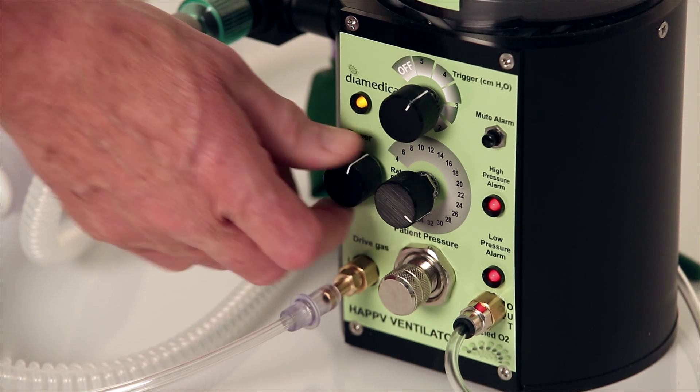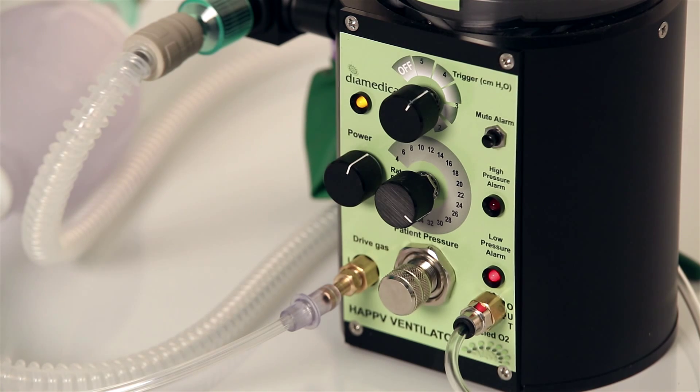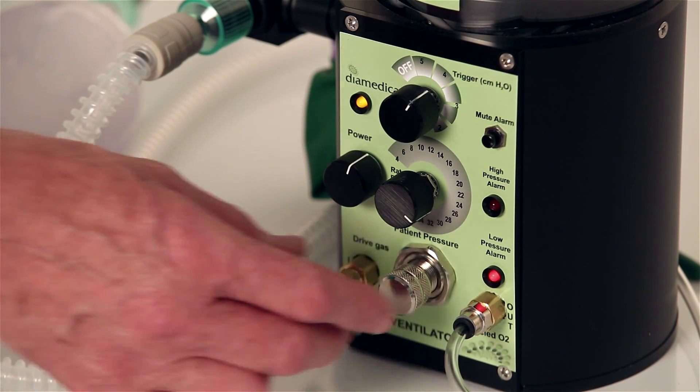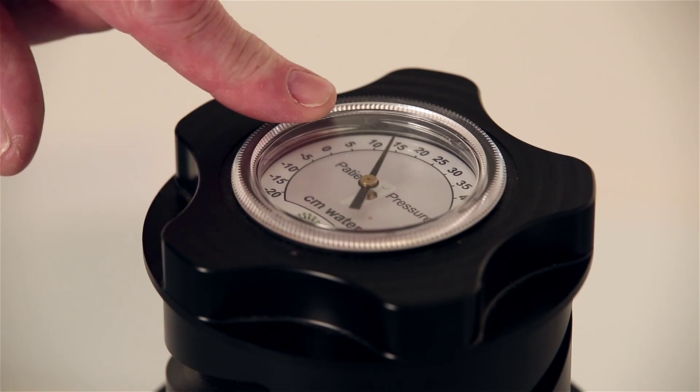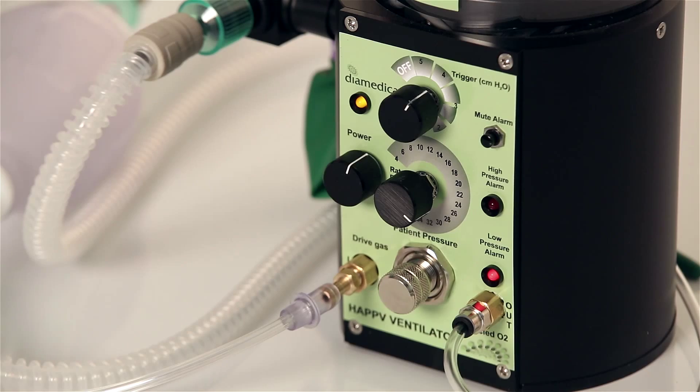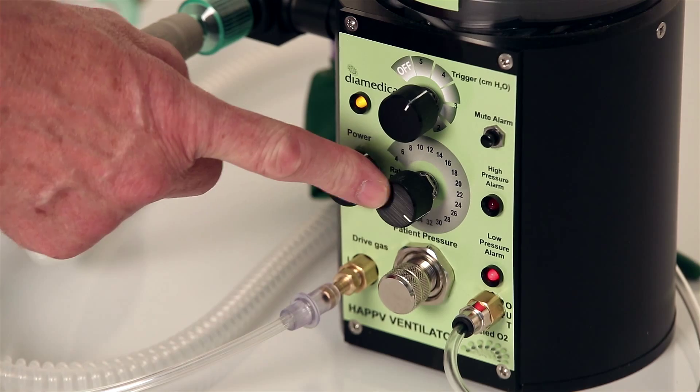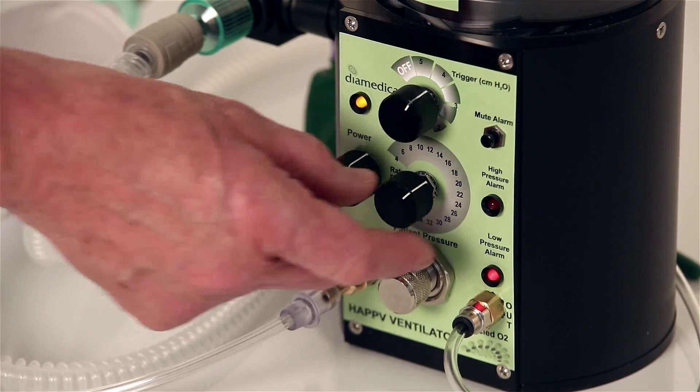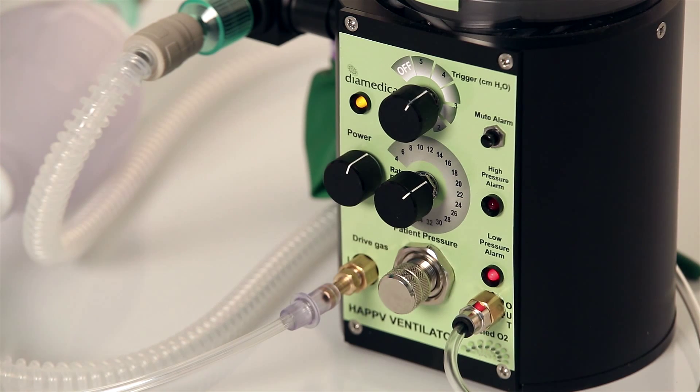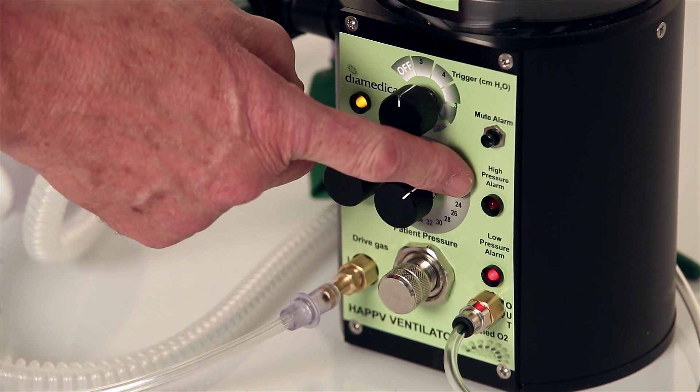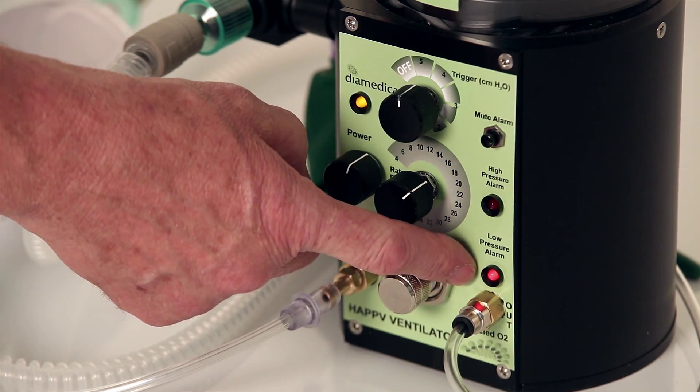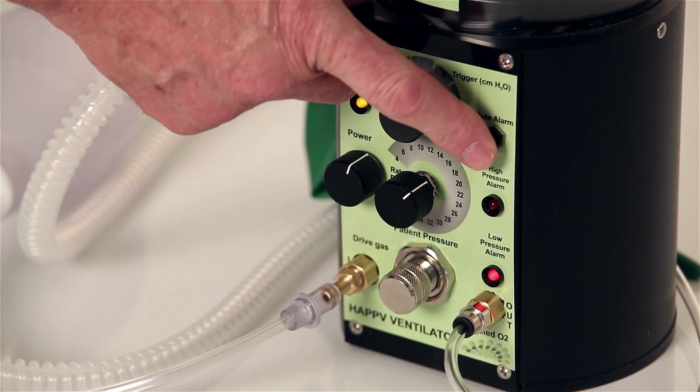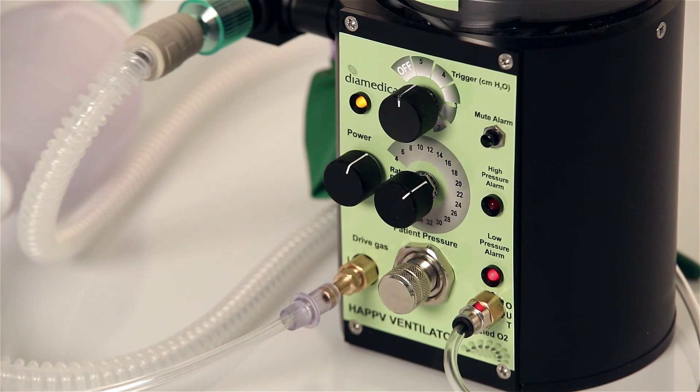There is an on-off control with a power-on light and a patient pressure control with the pressure gauge mounted in the top of the helix screw. There is a breaths per minute control that will provide a rate from 4 to 40 breaths per minute by simply turning it to the desired setting and a triggered breathing control to assist weaning or to provide pressure support. There is an alarm for high pressure and low pressure or disconnect alarm with a mute for the audible low pressure alarm.